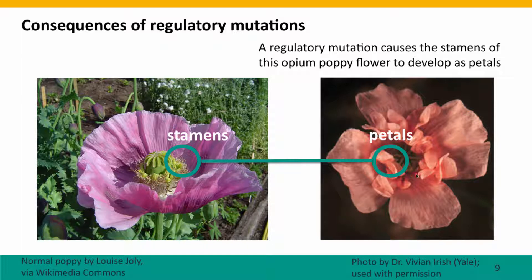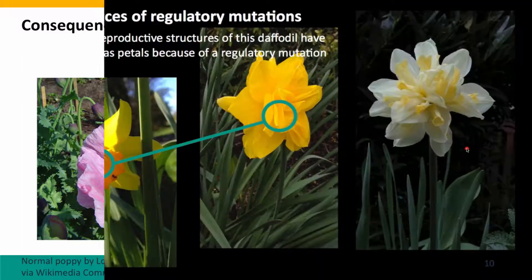Here's a mutant poppy. It doesn't have any stamens at all. Instead, the stamens have grown into little petals. It's a very pretty poppy, but it's unable to reproduce because it doesn't make pollen.